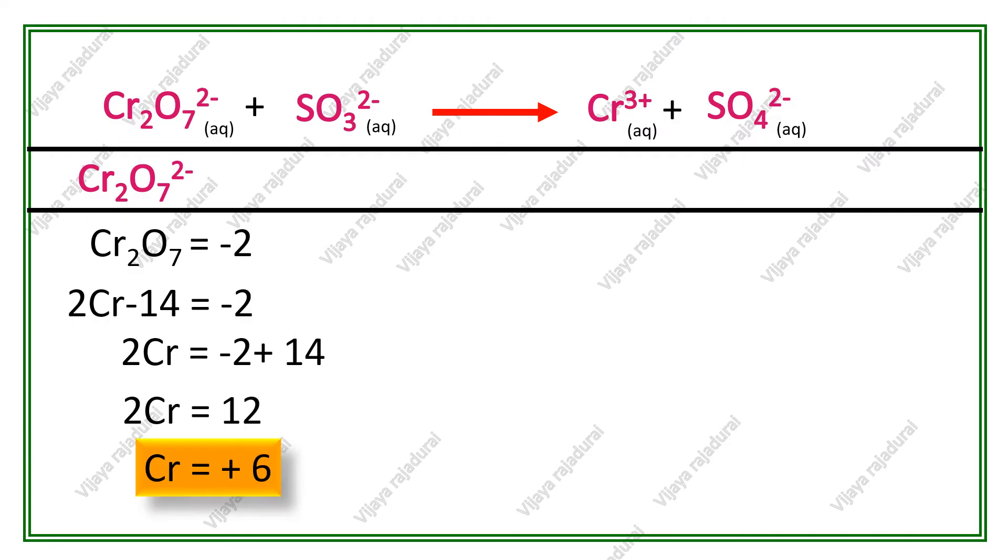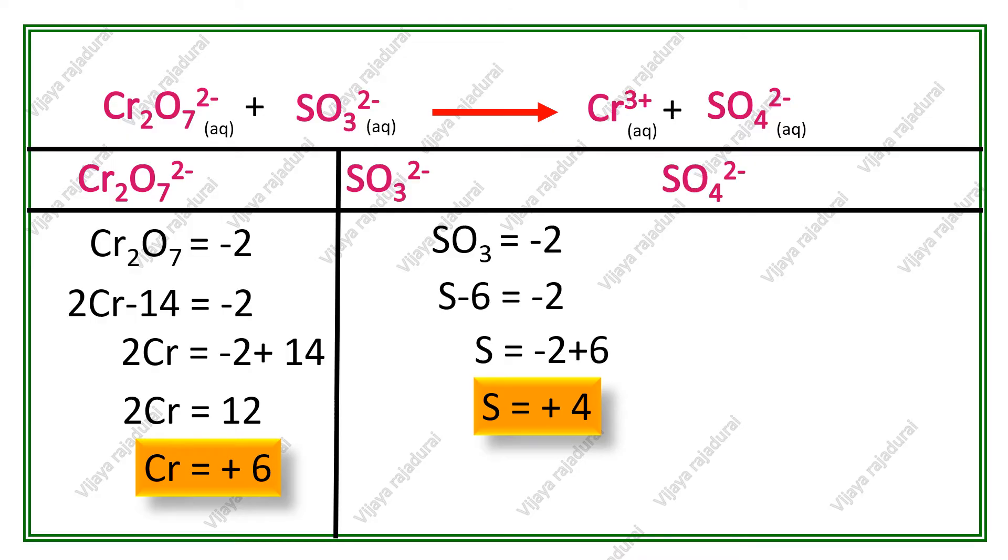Chromium is +6. Sulfite ion oxidation number is +4. Sulfate ion oxidation number is +6. Chromium ion is 3+ ion.